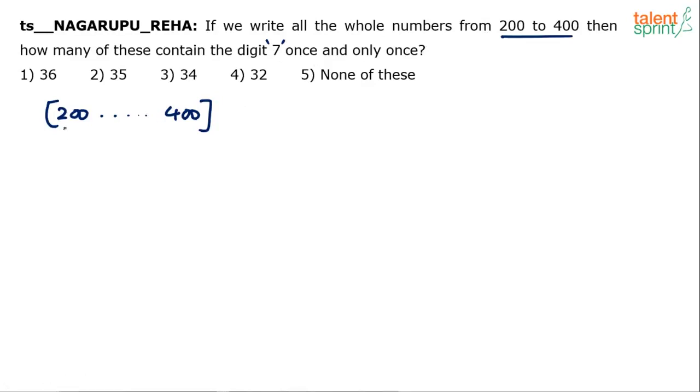Now, just think of the numbers. Start from 200. 207, then there will be 217, 227, 237 and so on. 247. I mean, let me just list it out. 257. You can count on fingers as well. You don't have to write 277, 287 and 297.